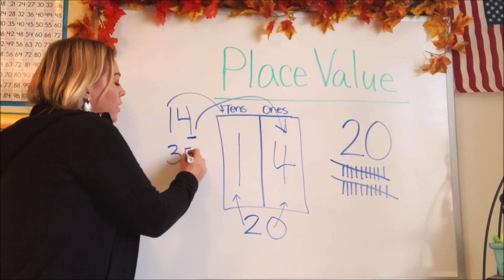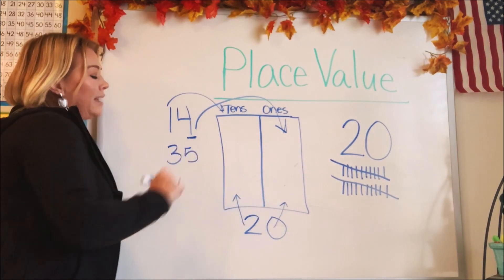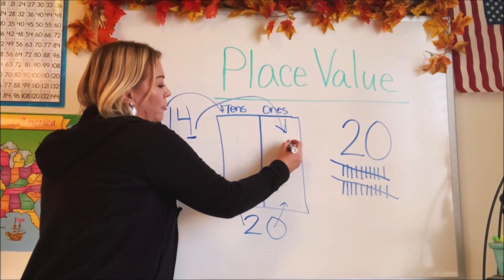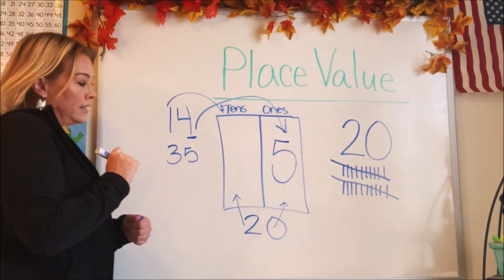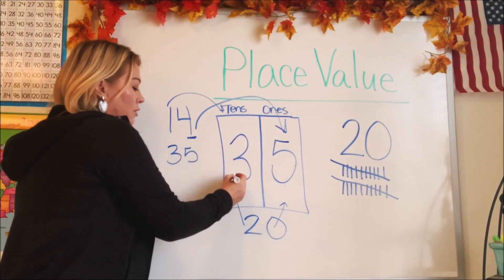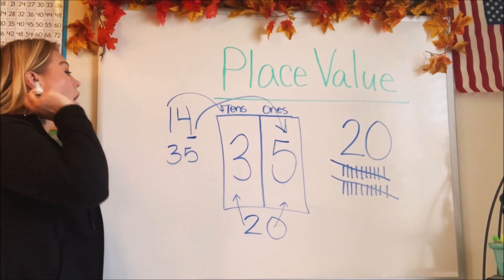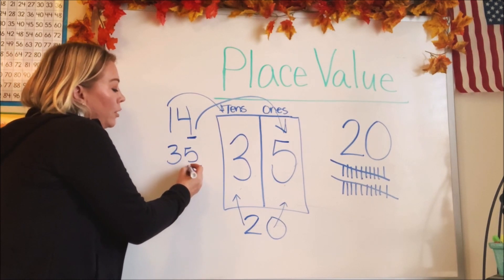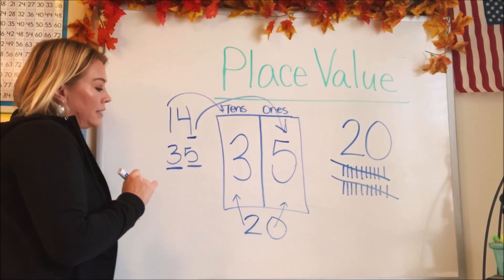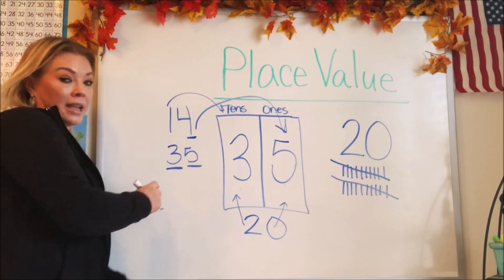What if the number was 35? Which number would be the last number — what's the last number in 35? It's five. So there'd be five ones. And how many tens would there be? There'd be three tens. So sometimes you can look at it and tell: the last number is the ones place and the second number is the tens place. You could put them in the columns and you'd know the answer just by looking at it.